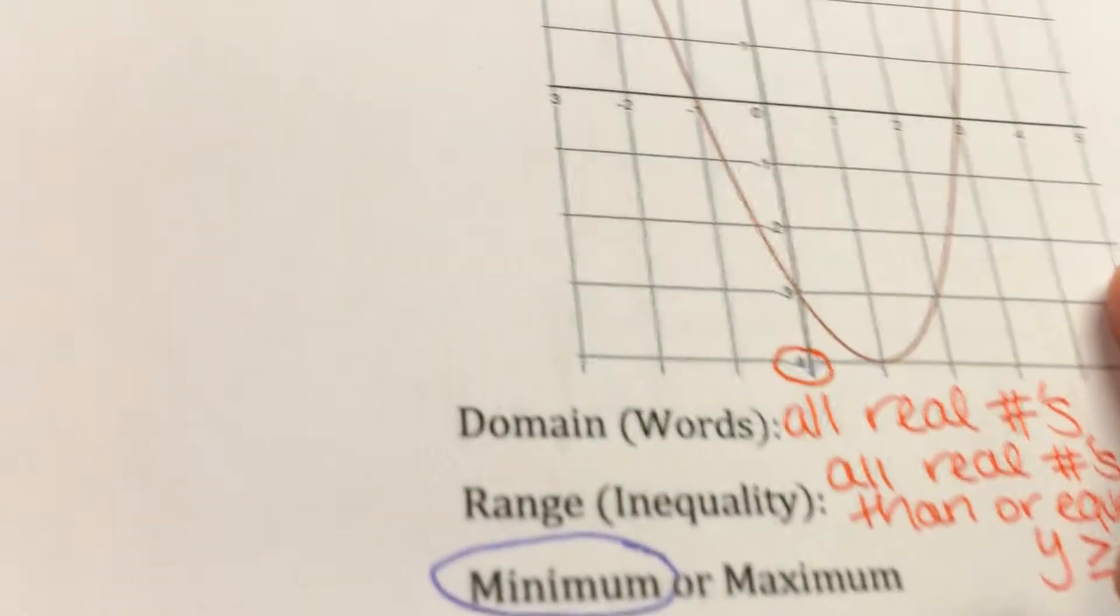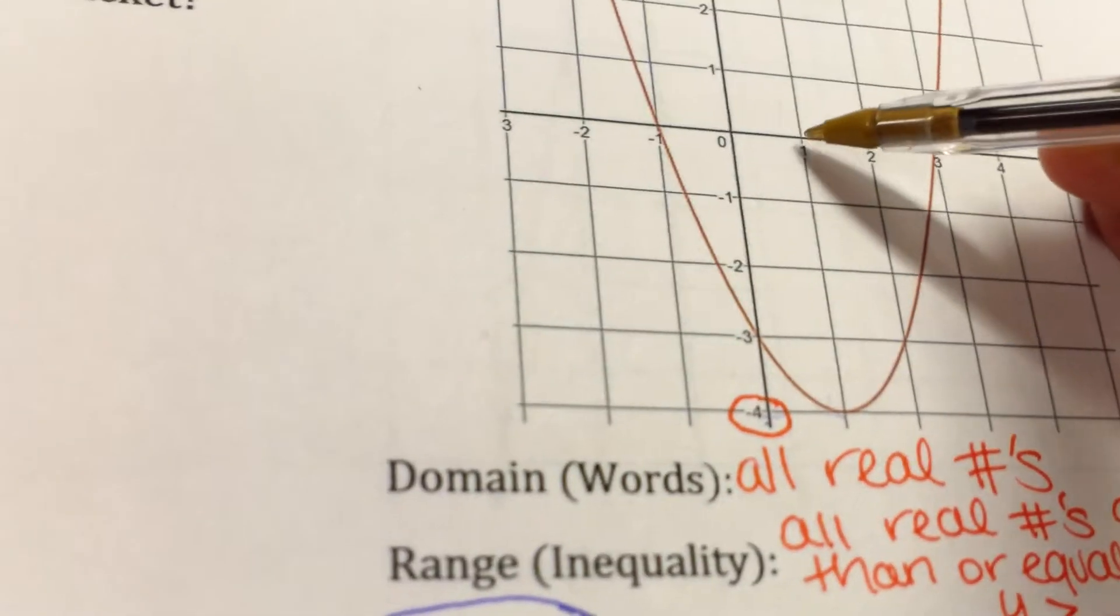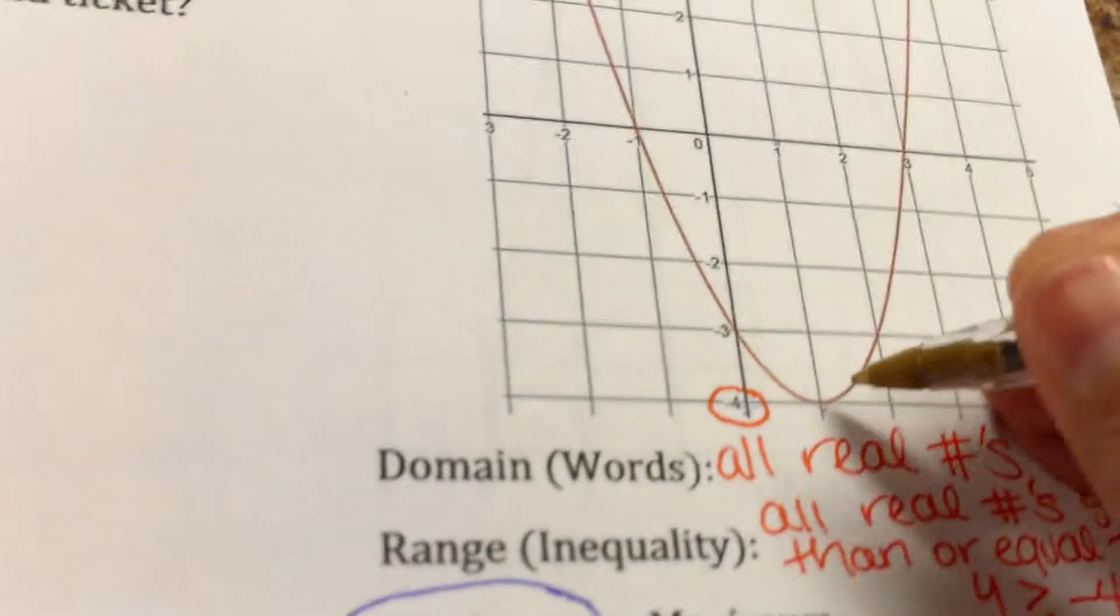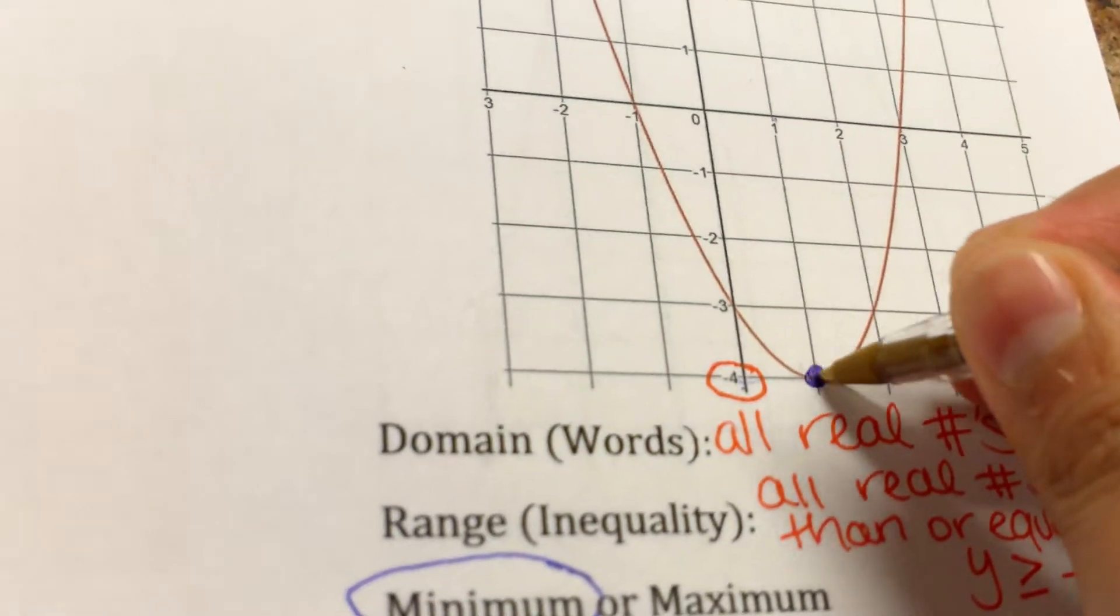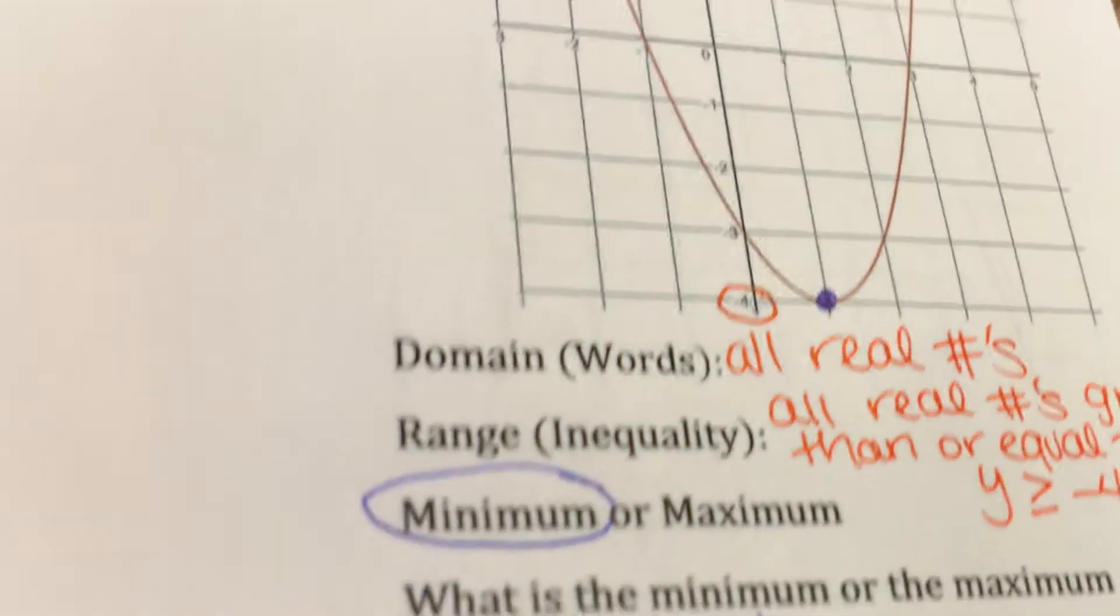What's my vertex? My vertex is 1, negative 4. My point, this is your vertex: 1, negative 4.